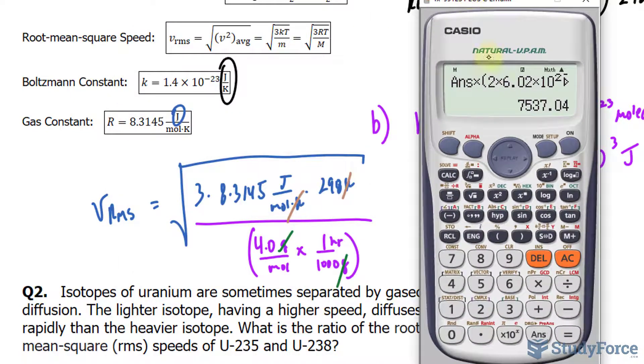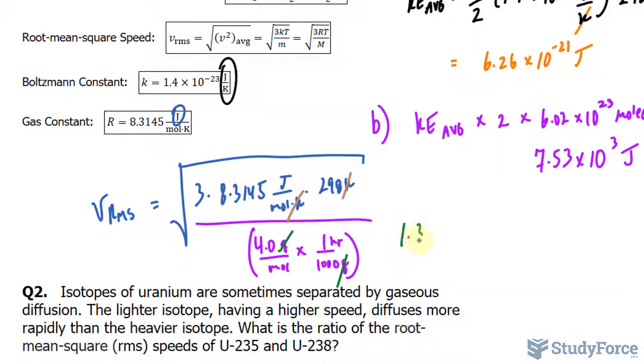All right, using our calculator, we have the square root of, in the numerator position, 3 times 8.3145 times 298, and in the denominator position, 0.004. That's the equivalent of grams to kilograms in this case. We'll round that to 1.36 times 10 to the power of 3 meters per second.